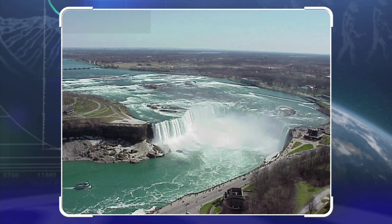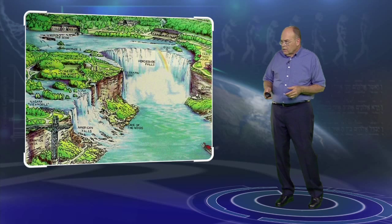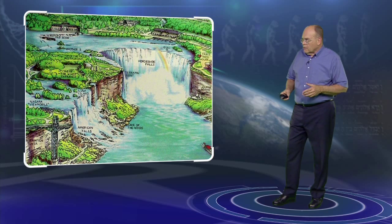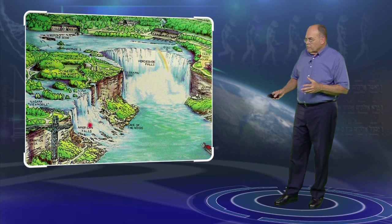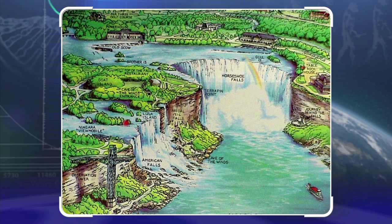This is a diagram of the falls. Here are the American Falls on the left, which don't look very pretty frankly, and over here are the Horseshoe Falls on the Canadian side — those are the pretty ones.